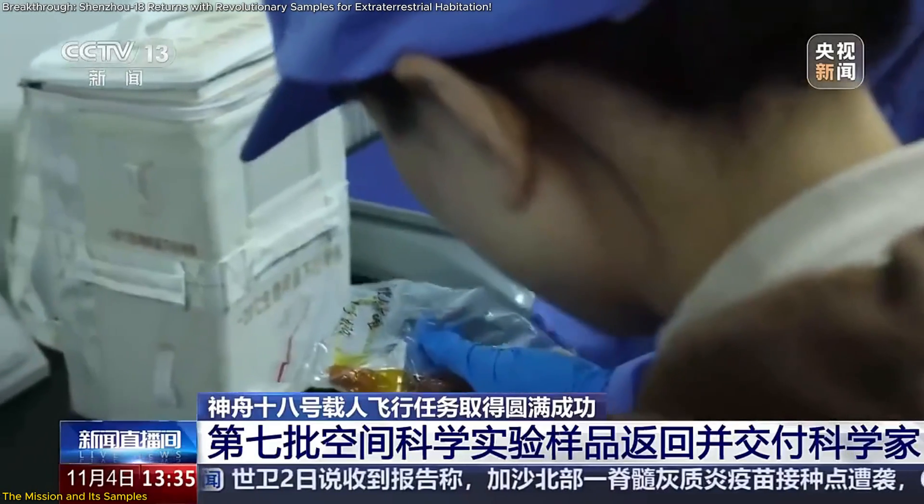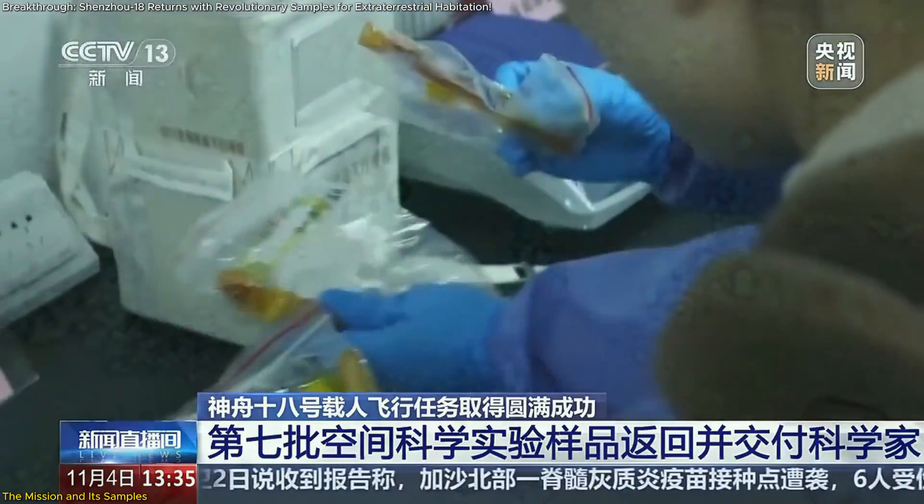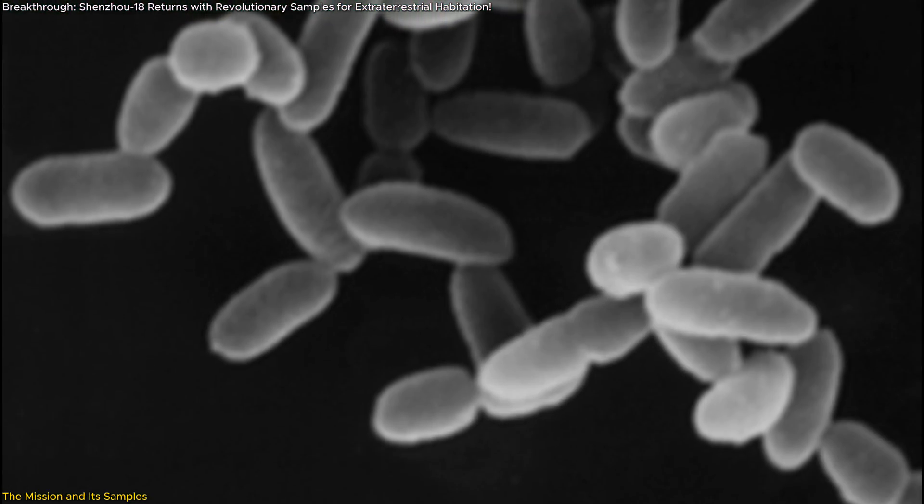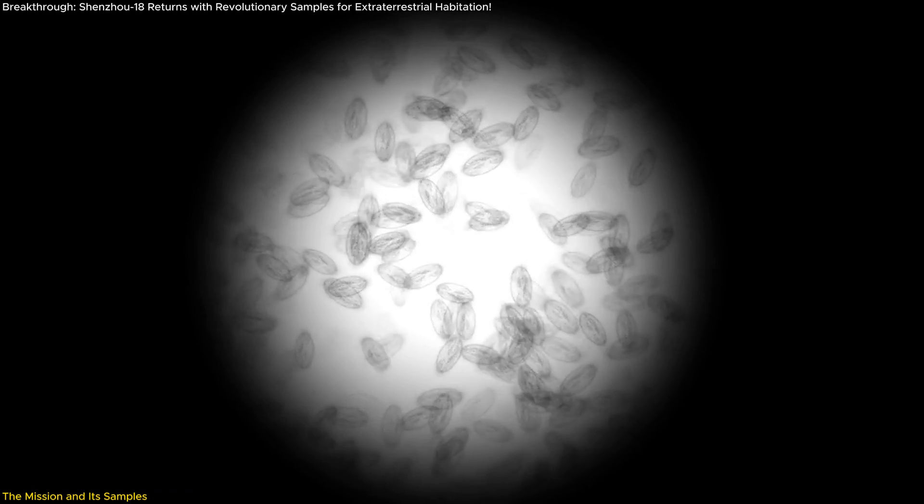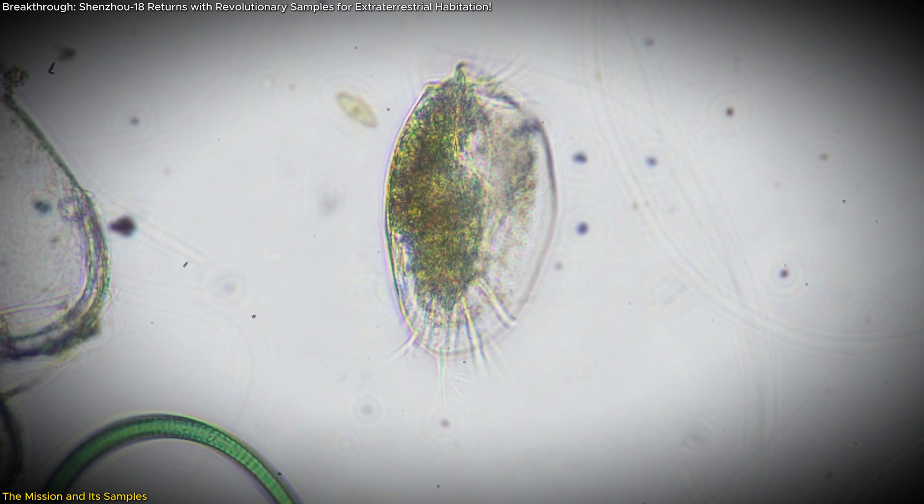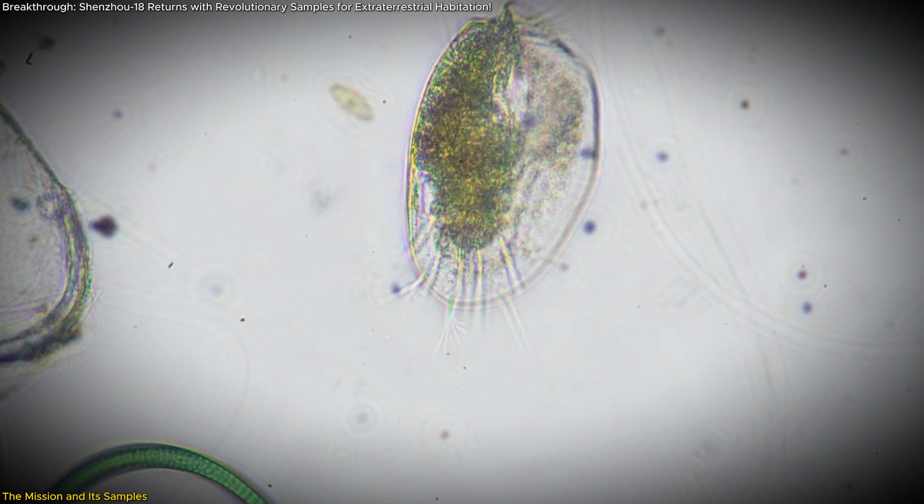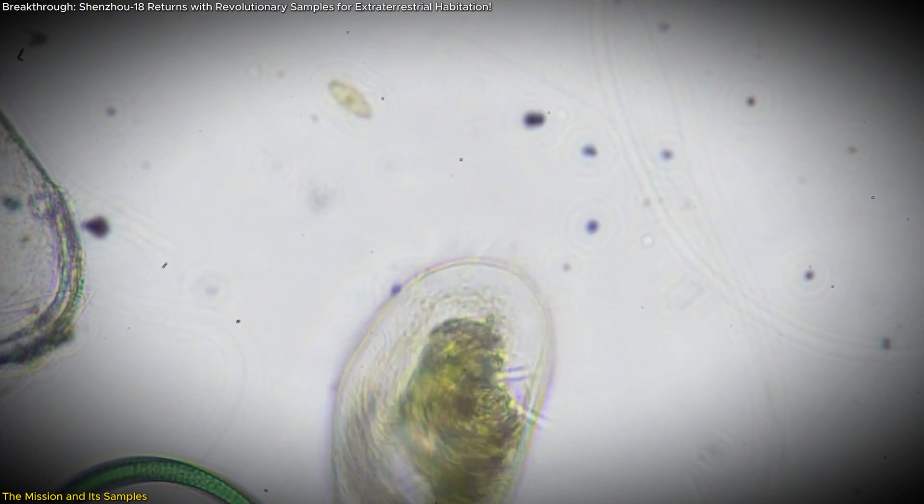The life sciences samples are equally fascinating. Shenzhou-18 brought back an array of microorganisms, including methane-producing archaea and rock-dwelling microbes. These aren't just any microbes, they're extremophiles, organisms that can thrive in extreme conditions, including radiation and low-nutrient environments.